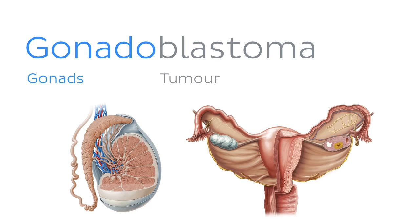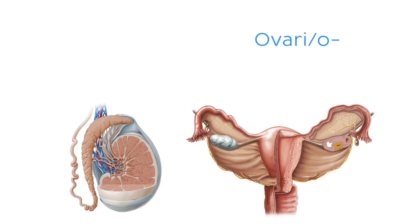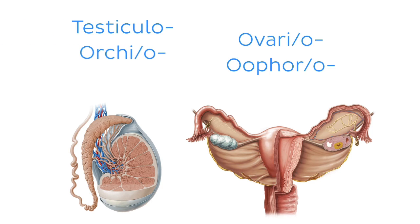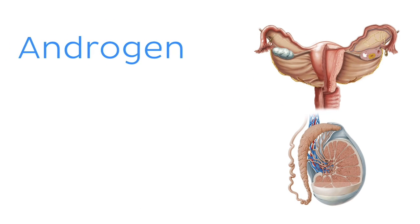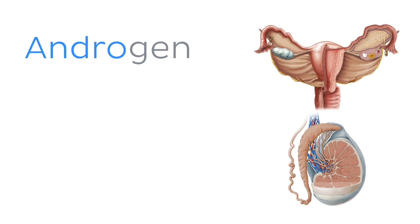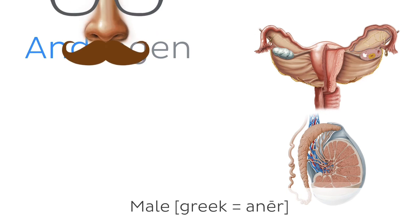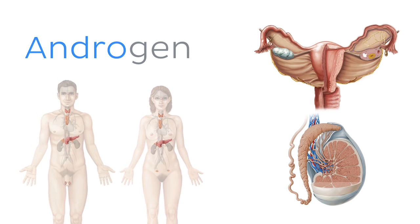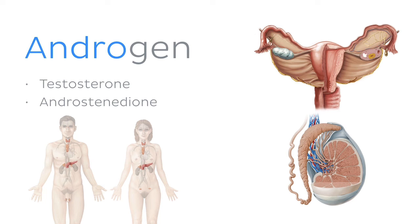If you watched our episode on the urogenital systems, you will remember that the root words associated with the ovaries are ovary or ovario, or ophor or ophoro, while those associated with the testes are testiculo, orki or orcio, or orkid or orkido. Now, in terms of gonadal hormones, the key term here is actually androgen, which comes from the root word andro, which means male in Greek. But don't let the name fool you — both men's and women's gonads produce androgens. The principal types of androgens are testosterone and androstenedione, which again are found in both males and females.